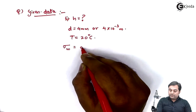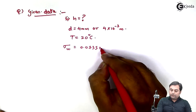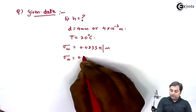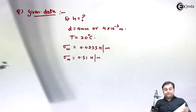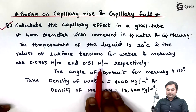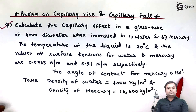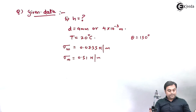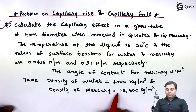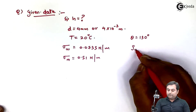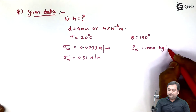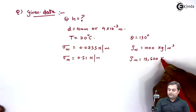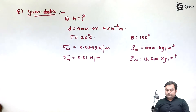Surface tension for mercury, sigma M, is 0.51 Newton per meter. The angle of contact for mercury is theta = 130 degrees. Density of water is 1000 kg per meter cube and density of mercury is 13600 kg per meter cube. This completes the given data.